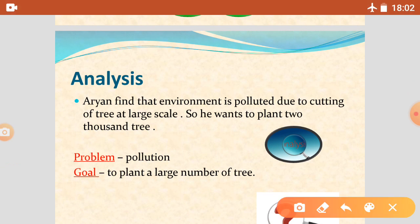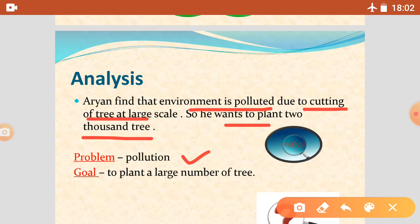Let's start with the help of an example. Firstly, what is the problem? Aryan finds that his colony environment has been polluted due to the cutting of trees. So he wants to plant 2,000 trees to reduce pollution. So he has analyzed two things: the problem, and he has made a goal.